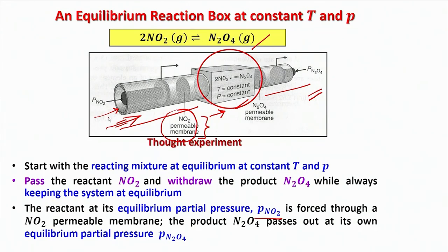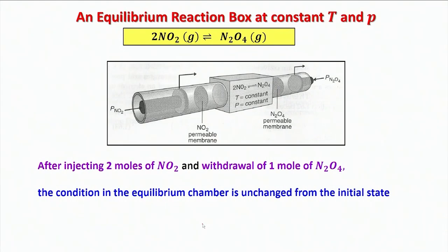I will also ensure that the product N2O4 passes out at its own equilibrium partial pressure P_N2O4. If I inject 2 moles of nitrogen dioxide under the defined experimental condition and withdraw on this side 1 mole of N2O4, in that case, the condition of the equilibrium reaction box or this reaction chamber remains unchanged from its initial state.